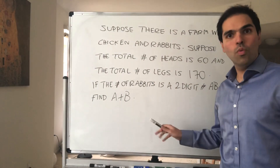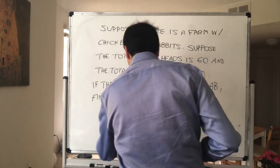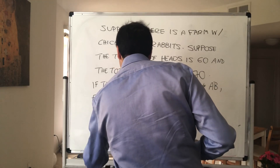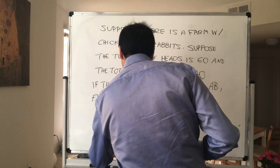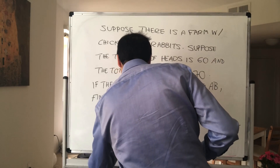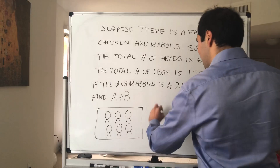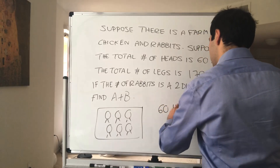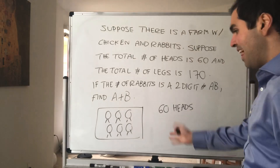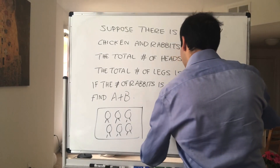Suppose in the worst case scenario there are only chickens — two-legged animals. Then what would happen? You would have 60 heads. But how many legs? Well, each chicken has two legs, so 120 legs.